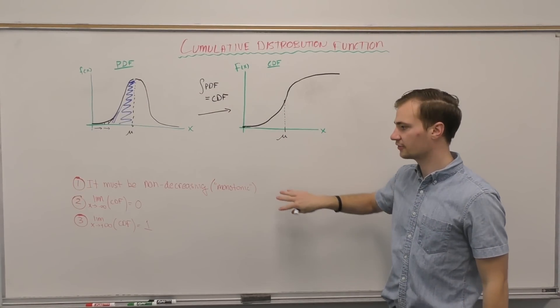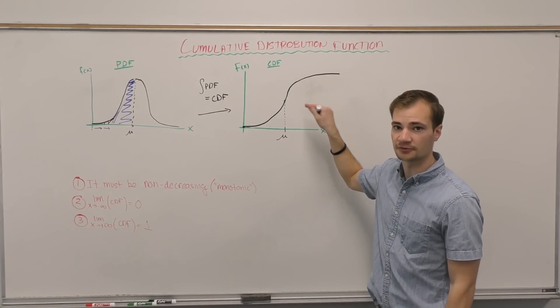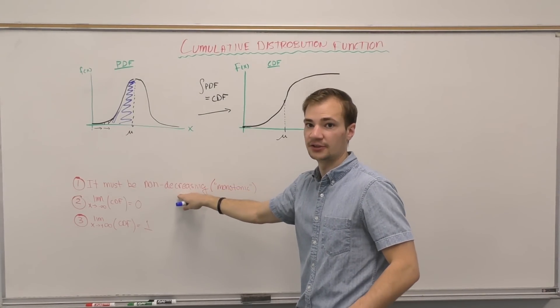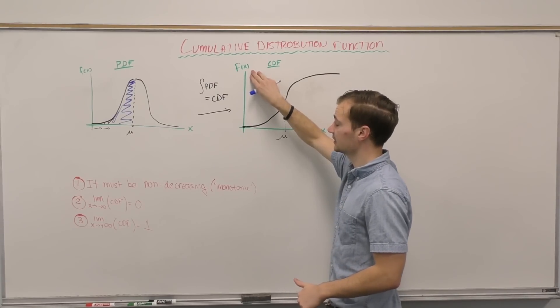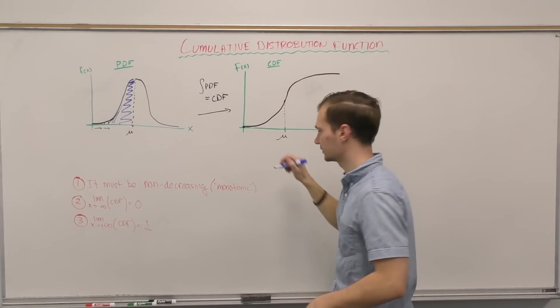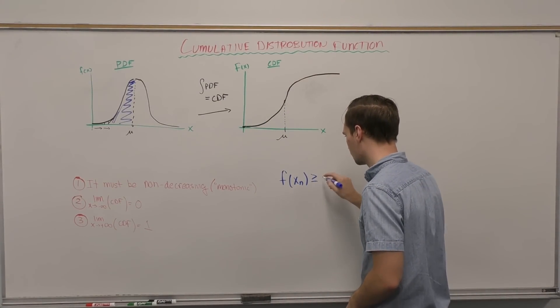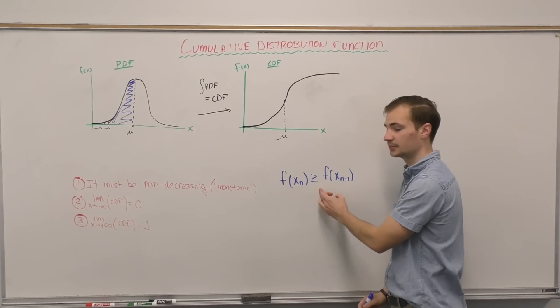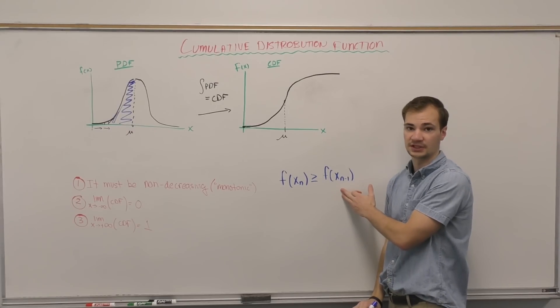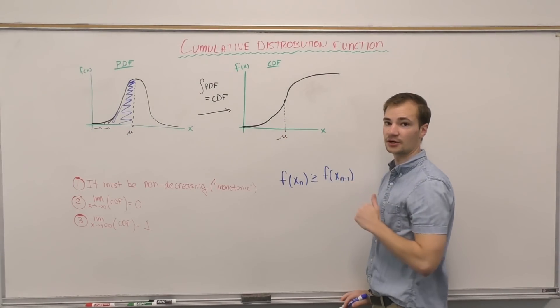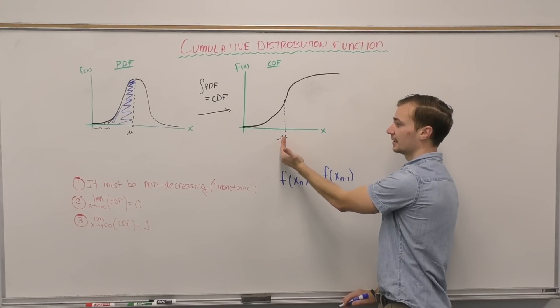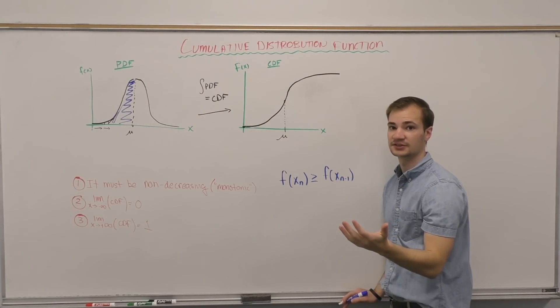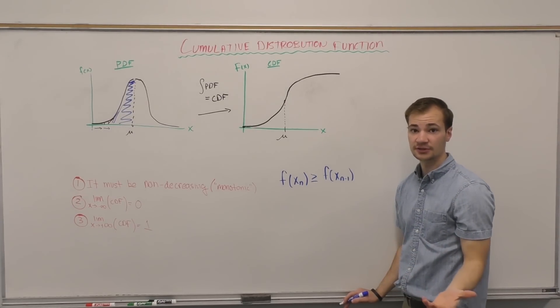So let's check if these three truths hold for the CDF that we just drew. First of all, it must be non-decreasing. This axis can never go down. That is, any given x-value must be greater than or equal to the previous x-value. Do we see that on here? Is there any scenarios where an increasing x-value yields a decreasing CDF value? The answer is no.